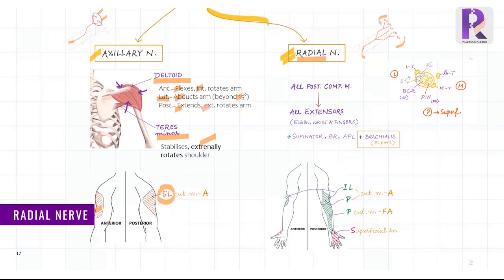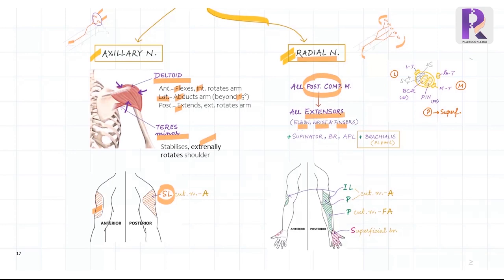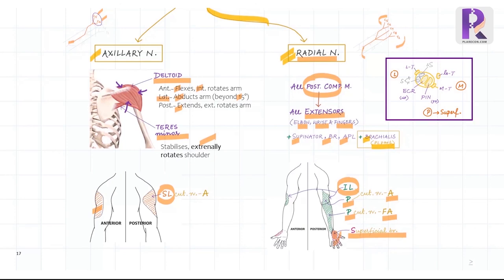Finally, the radial nerve — the thickest of all — supplies all posterior compartment muscles including all extensors of elbow, wrist and fingers, the supinator, brachioradialis, abductor pollicis longus, and a small posterolateral portion of brachialis. It also gives off the inferolateral and posterior cutaneous nerve of arm, the posterior cutaneous nerve of forearm, and terminal superficial branches supplying the anatomical snuffbox area, the radial half of the dorsum of hand, and the radial three-and-a-half fingers to the DIP joint. Topographically, like the median nerve, sensory fascicles lie laterally, finger extensor (PIN) fascicles lie medially, and wrist extensor fascicles — ECRL and ECRB — lie in the middle. All five terminal branches also give sensory articular fibers to the adjacent joints they traverse.